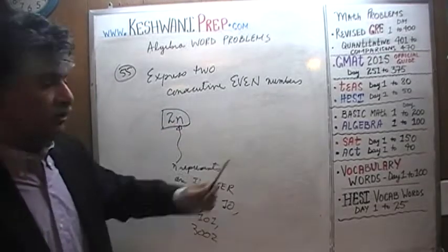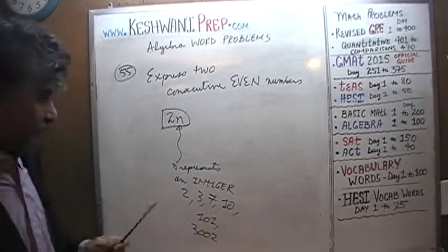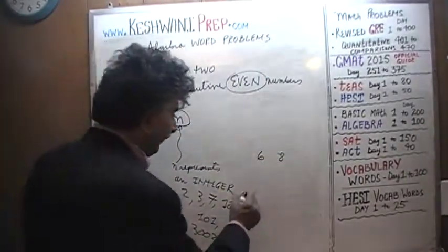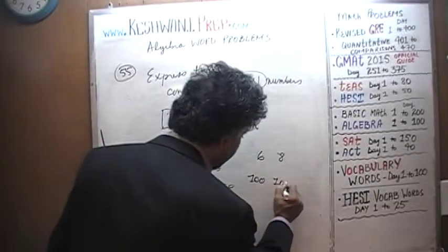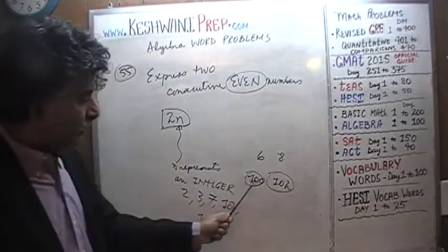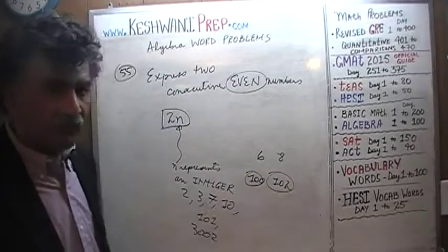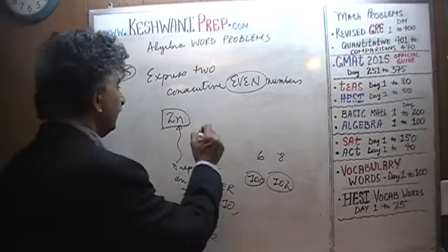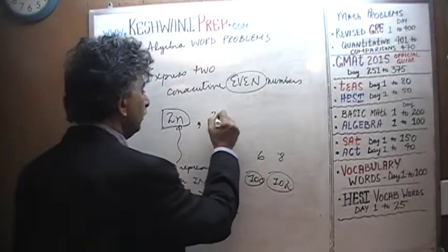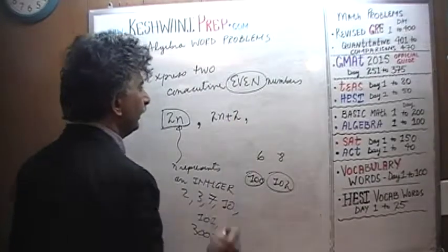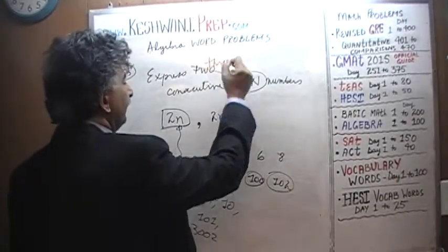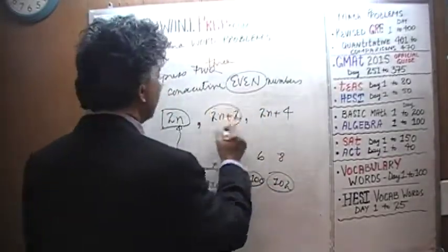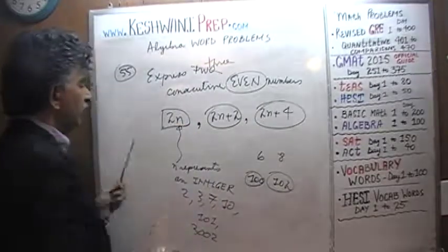You are being asked to express two consecutive even numbers. If they are consecutive even numbers — like 6 and 8, or 100 and 102 — the next one is always 2 more than the one before. The one before was 2N, so the next one is 2N plus 2. If they had asked for three consecutive even numbers, the one after that would be 2N plus 4.